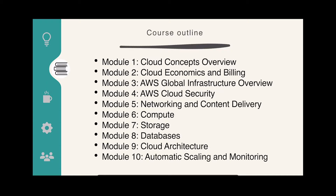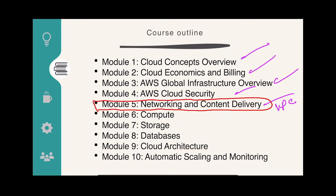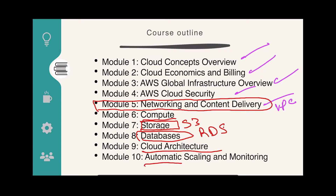The course is divided into 10 lessons. We will look at cloud concepts, then billing, then the global infrastructure, then AWS cloud security and the shared responsibility model. Then we will look at networking and content delivery — normally this is the VPC, and if you understand VPC, you will be able to pass the cloud practitioner very easily. Then we will study compute services: how to build an EC2 machine, a Lambda function, Elastic Beanstalk, or Elastic Container Service. Then we will look at storage services like S3 and databases like MySQL in RDS, and finally the Well-Architected Framework and automatic scaling and monitoring.